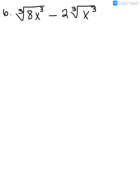Here we have cube roots and they're not like terms, so let's see if we can get them to be like terms. For the cube root of 8x cubed: 8 is a perfect cube, so the cube root of 8 is 2, and the cube root of x cubed is x. Minus 2 times the cube root of x cubed, which is again x. Now we have like terms, and 2x minus 2x equals 0.